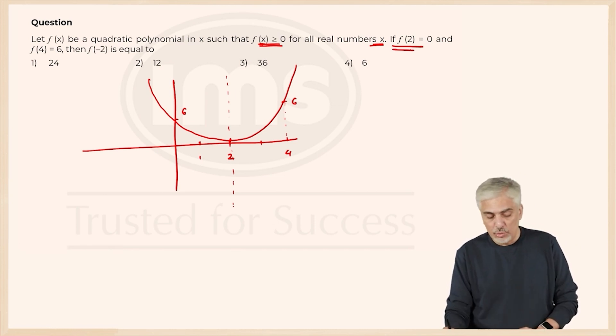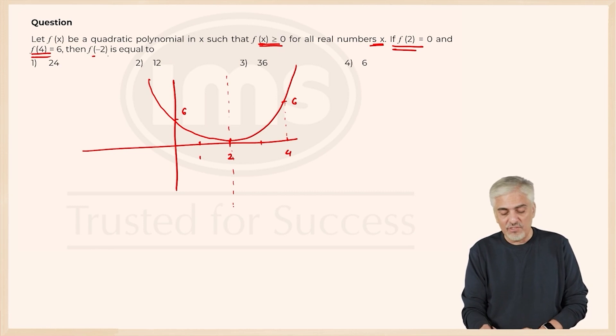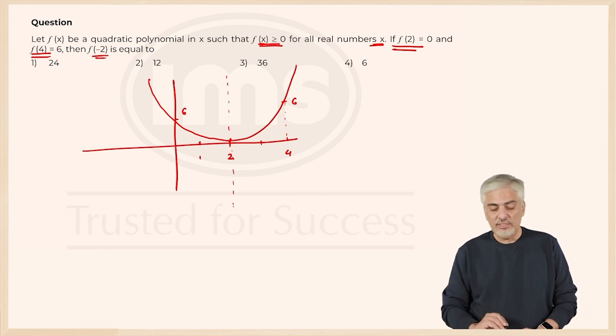Basically what I have done is I have added one more data to the question. They have told us f of 2 and f of 4. They have asked for f of minus 2. But I have found f of 0 is also 6. f of minus 2 will keep going higher, so it will definitely be more than 6. So fourth option is not my answer anyways. That is very clear.